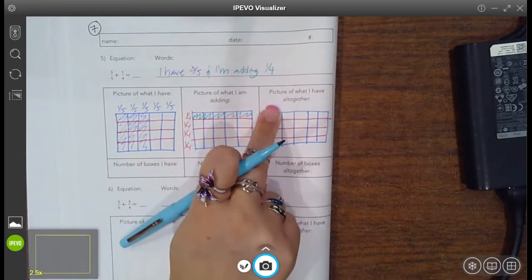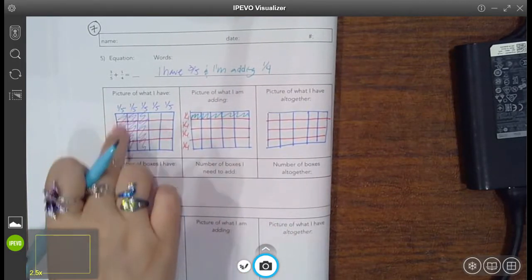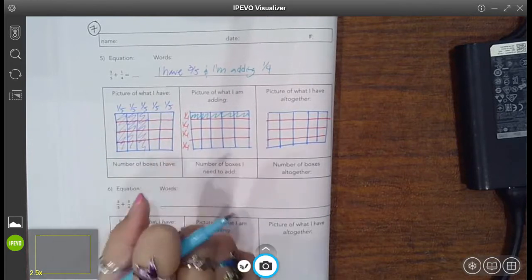Okay, so do you see that I shaded one out of one, two, three, four equal pieces? And I shaded one, two, three out of one, two, three, four, five equal pieces.